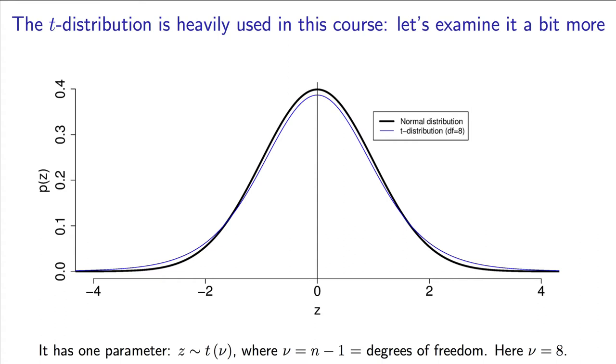The t-distribution only has one parameter that we have to specify, the number of degrees of freedom. Contrast that to the normal distribution, where we have to specify two parameters, the mean and standard deviation. The degrees of freedom alter the shape of that distribution. With higher degrees of freedom, the t-distribution approaches the normal distribution shape.